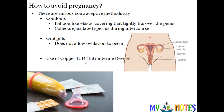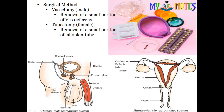Third is the Copper IUD. IUD stands for Intra-Uterine Device. It is T-shaped and made of copper. This T-shaped device is fitted inside the uterus. The copper T is placed in the fallopian tube area and prevents the sperm from travelling through the fallopian tube, thus preventing fertilization.